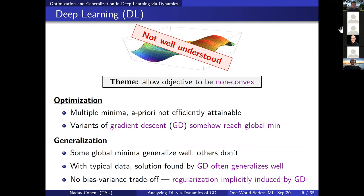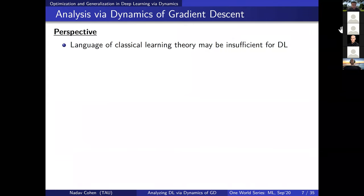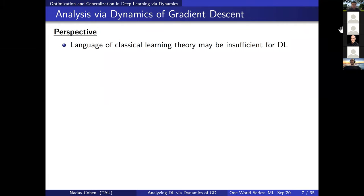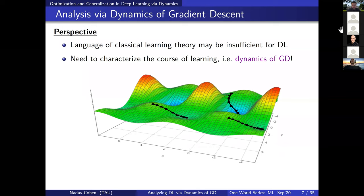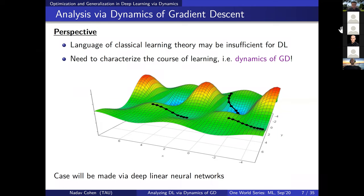The case I'm going to try and make today is that maybe the language we've developed for understanding classical machine learning — the language of classical learning theory — is just not sufficient for understanding deep learning. In that case, maybe a way to make progress is to characterize what goes on in learning by studying the dynamics of optimization: thinking about trajectories, not just about the final solution. I'll make the case more concretely specifically for deep linear neural networks, which is a simplified class of models that does capture many of these phenomena.